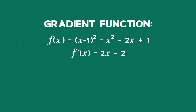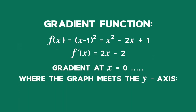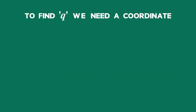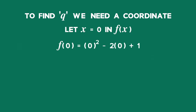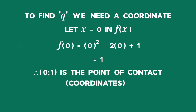To find the equation of the tangent at the point where the graph meets the y-axis means we need the equation of the tangent at the y-intercept, so the x value must be 0 at that point. f′(0) = 2 × 0 − 2 = −2, so a = −2. To find q, we need the coordinates of a point on the curve. f(0) = 0² − 2 × 0 + 1 = 1. So (0, 1) is the point of contact.